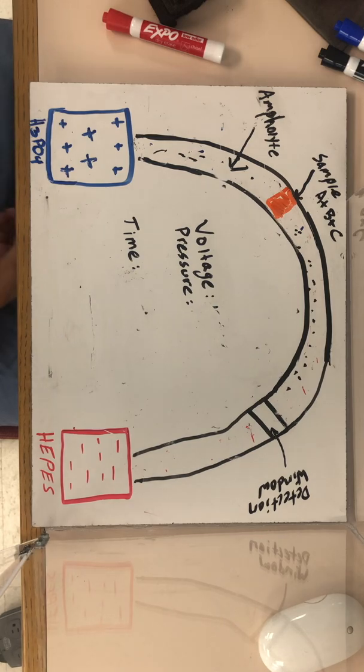You're going to decide what kind of ampholyte range you're going to use based on your buffer pHs and based on the analytes that you're using, their isoelectric points. But for the moment, that's not important.